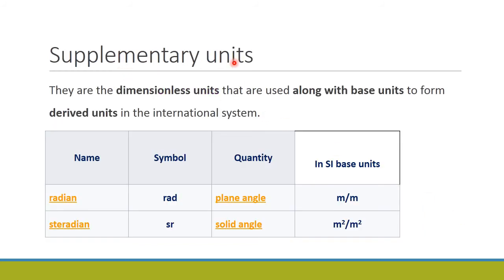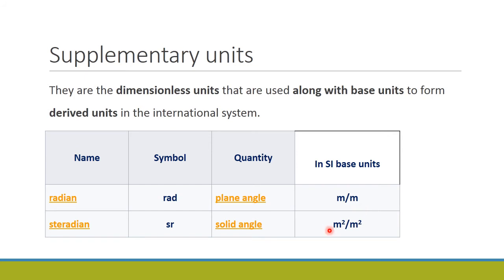The third type is supplementary units. These are dimensionless units used along with the base units to form derived units in the International System. Some examples are radian and steradian. Radian has symbol rad and measures plane angle; in SI base units it is expressed as m/m. Steradian has symbol sr, quantity is solid angle, and in base units its symbol is given as m²/m².